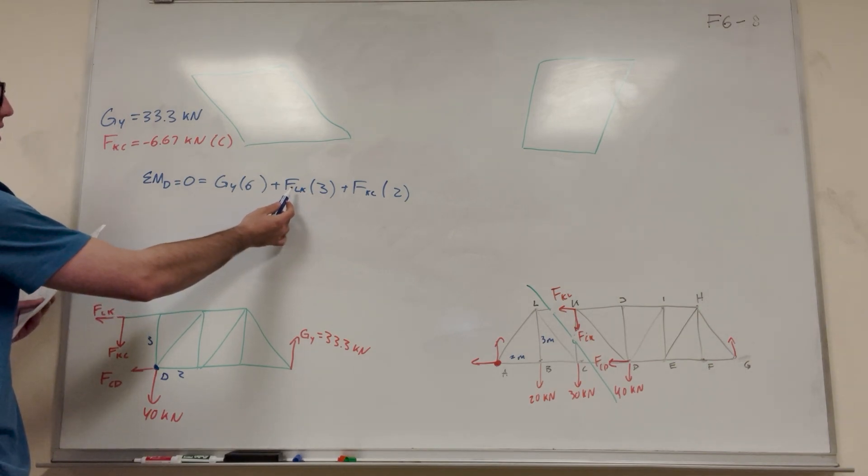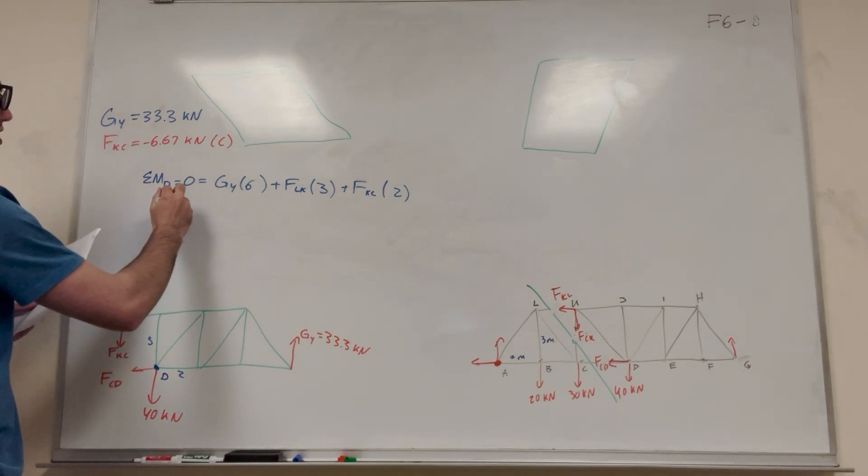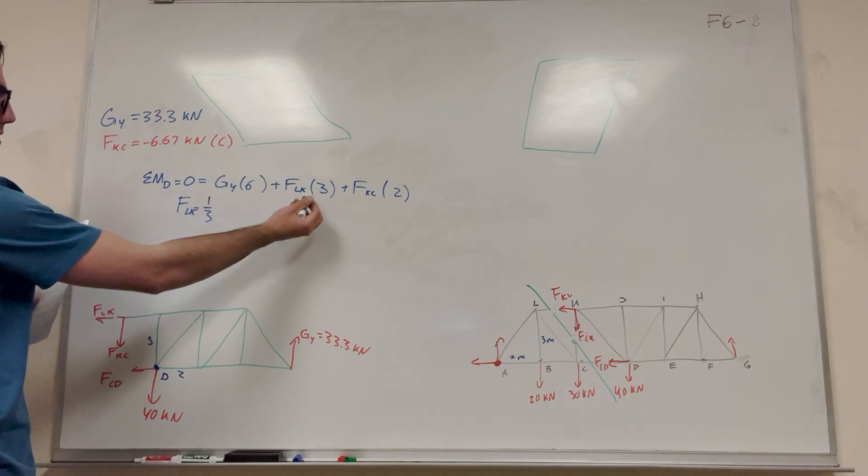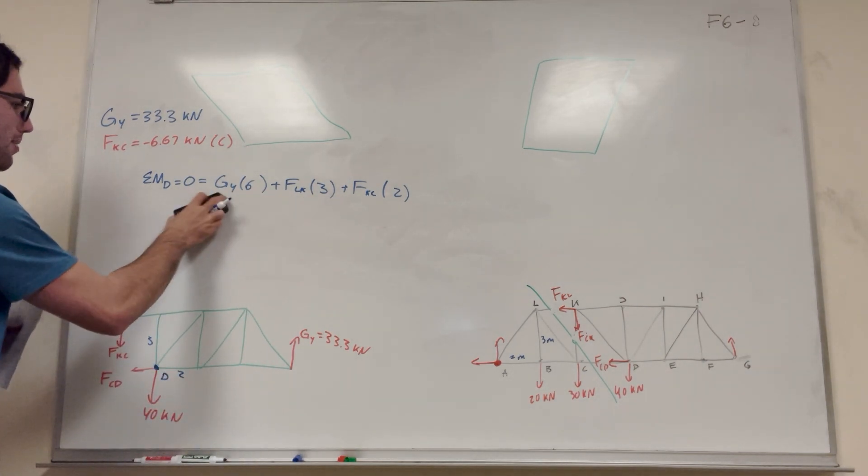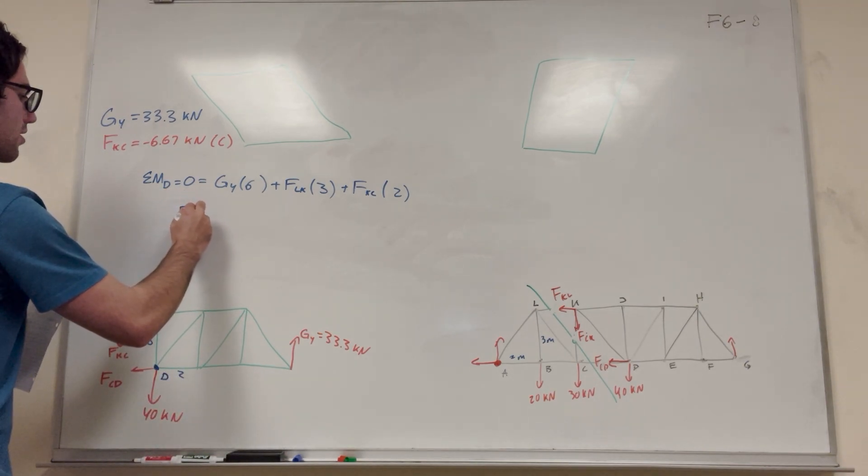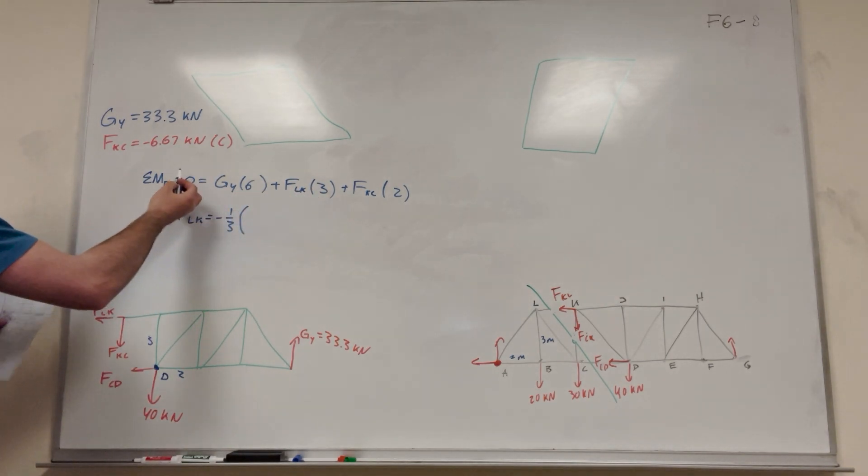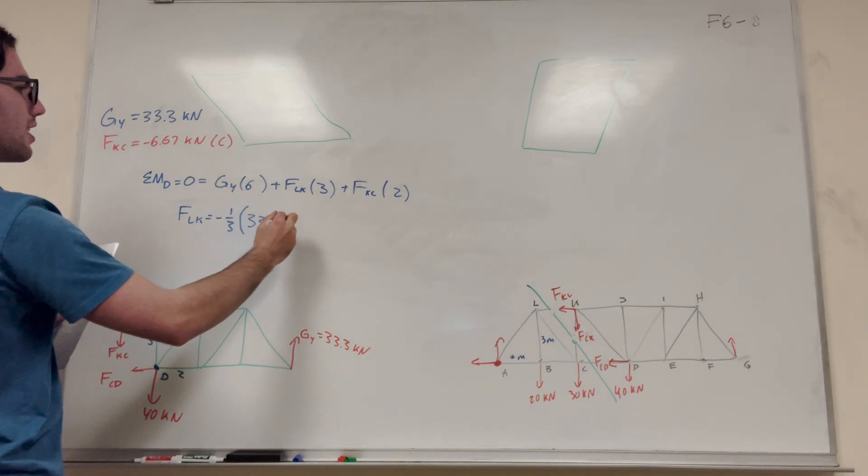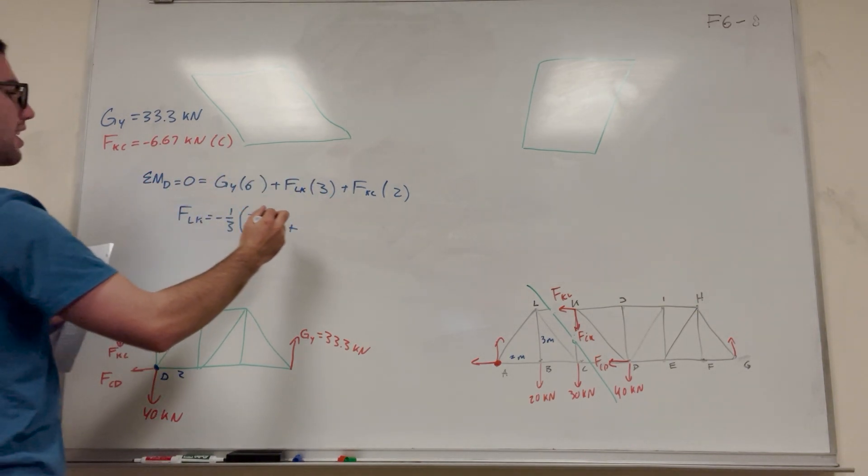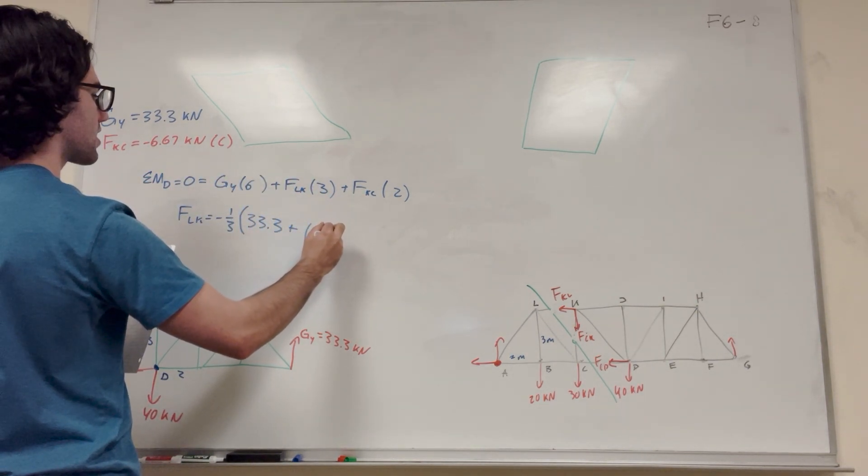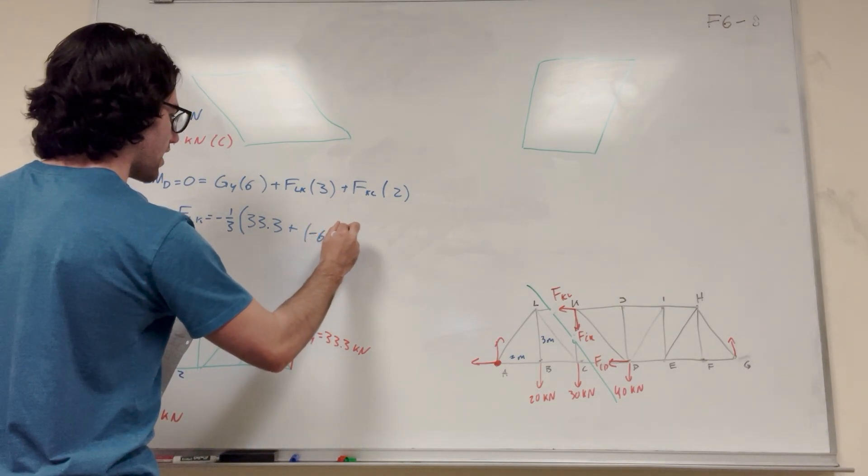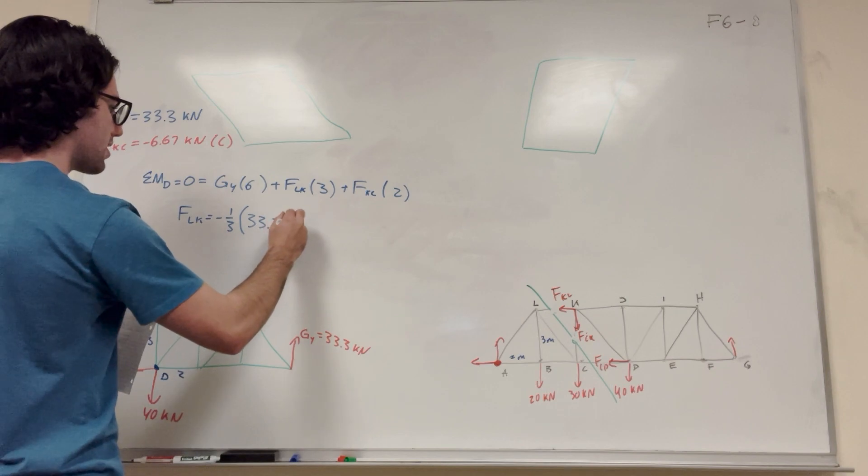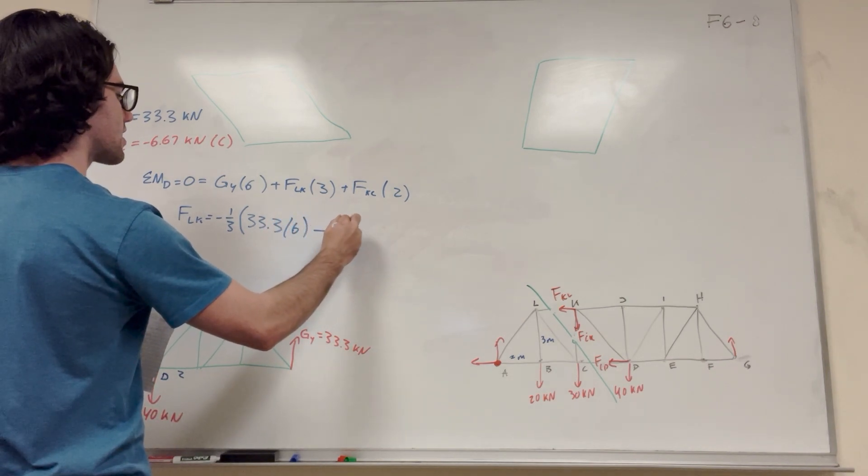So then all you have to do is subtract by FLK over here and divide by 3. So let's do that. FLK is equal to 1 third. Of course we're subtracting, and it's also going to be negative. This is getting messy. Let me write this better. Right? Because we have to subtract this over, so it'll be a negative 3 that we're going to have to divide by. And then so G of Y is 33.3. And then FKC we found earlier is negative, right? Negative 6.67. And then times 2. Oh, and this is times 6. Oh, I'm just missing out so much today.